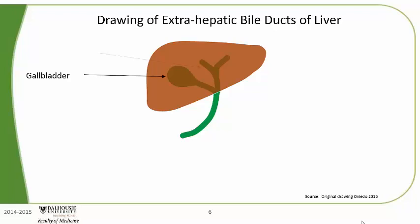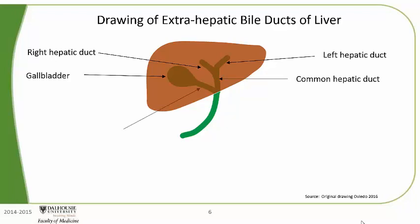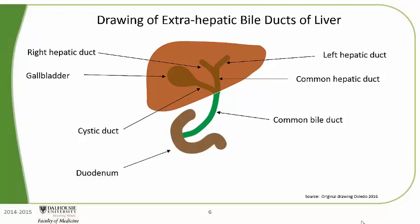Let's name the bile ducts. This is the right hepatic duct. This is the left hepatic duct. This is the common hepatic duct. This is the cystic duct. And this is the common bile duct. The common bile duct enters the duodenum. This is an arrow showing bile entering the duodenum. All of these named bile ducts are known as extrahepatic bile ducts, also referred to as the large bile ducts.